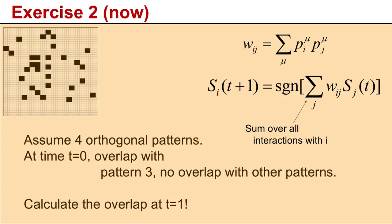Before we continue, let's now look at exercise number 2. Let's assume you have four orthogonal patterns. I explained what this is. Assume that at time t equals 0, there is only overlap with pattern number 3, but no overlap with other patterns. I want you to calculate the overlap with pattern number 3 in the next time step, using the formalism I just explained.